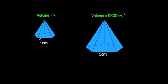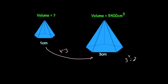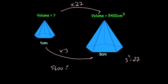This time the length of the side is 1 and the length of the other side is 3. The volume for the larger one is 5,400 and we want to find the volume for the smaller one. The scale factor of enlargement is 3, so for the volumes we do 3 cubed to get 27 — the volumes are 27 times bigger. Therefore if we divide the larger volume by 27 we'll get the volume of the smaller one: 5,400 divided by 27 gives the volume of the smaller one as 200 centimeters cubed.